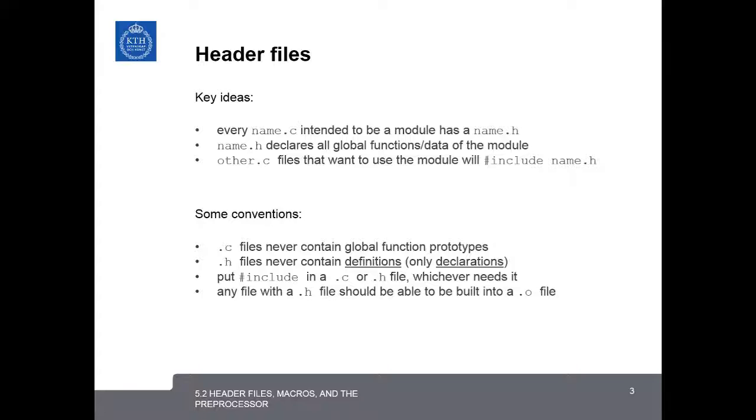Now we can look at some conventions for writing header files. First of all, .c files never contain global function prototypes. And .h files never contain definitions, only declarations. The definitions should be in the C files. When we're using hash includes, we can put those in a .c file or a .h file, but we should always choose whichever is more appropriate. If the code in the C file needs it, it's better to put it in the C file. If a definition in the header file needs it, it's better to put it in the header file. Any file with a .h file should be able to be built into a .o file, which means any time you build a module with a header file, it should be able to be built into an object file so it can be shared with other pieces of C code.